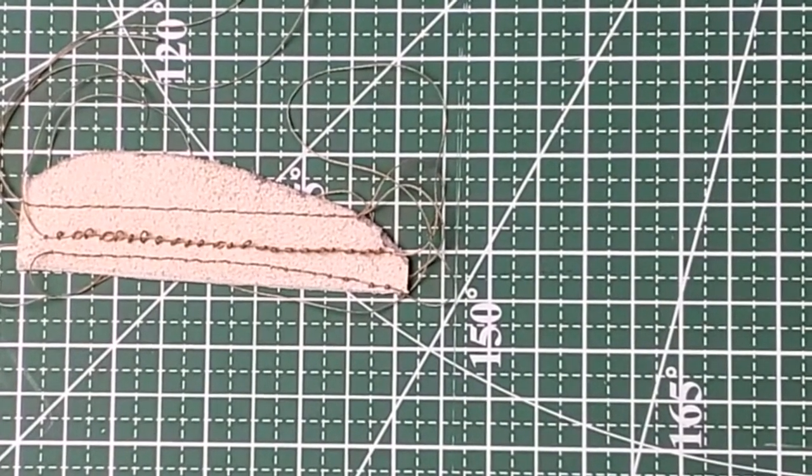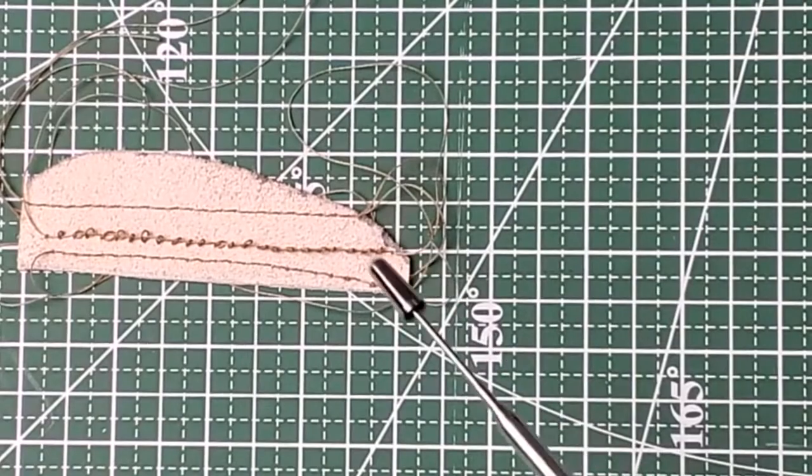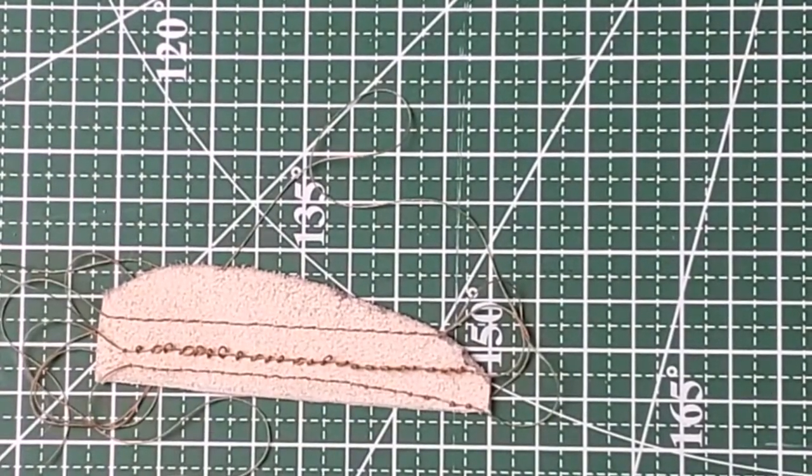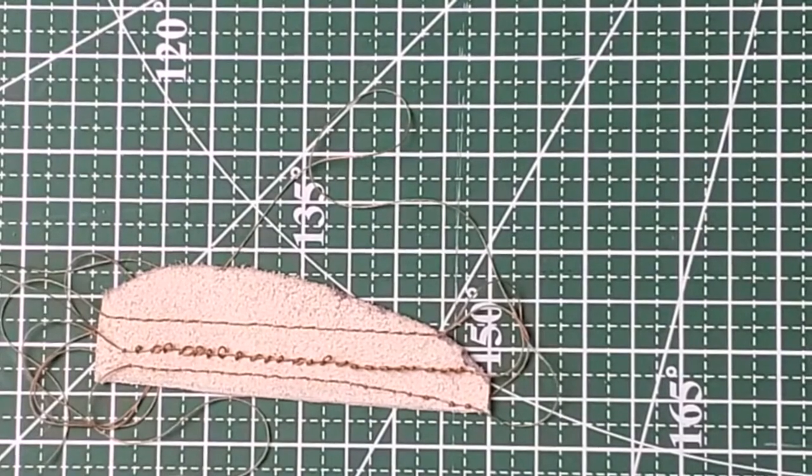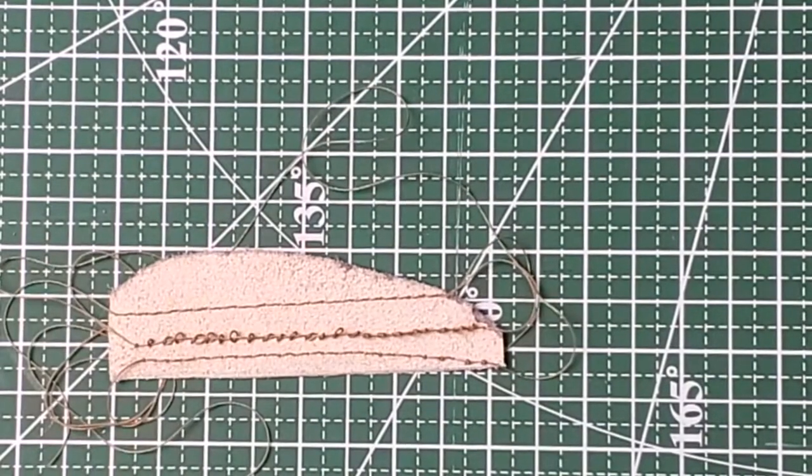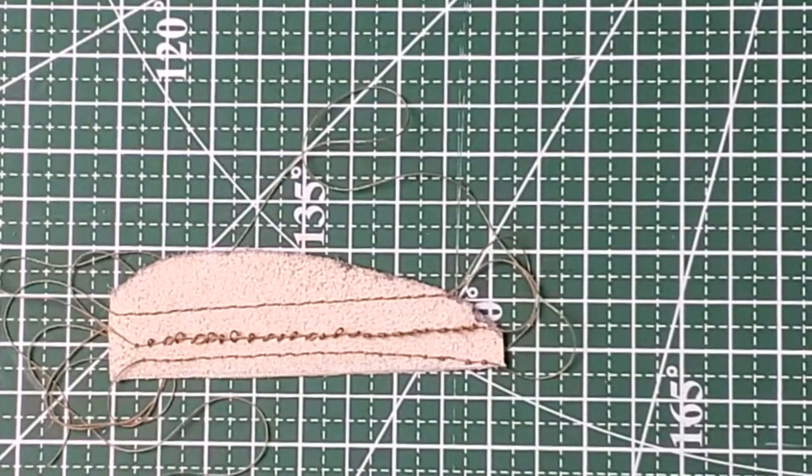When you're using a domestic machine to sew leather, you want to use a size 16 or 18 needle if your machine allows it, and you're going to use a coarser type of thread that's specifically for sewing leather.